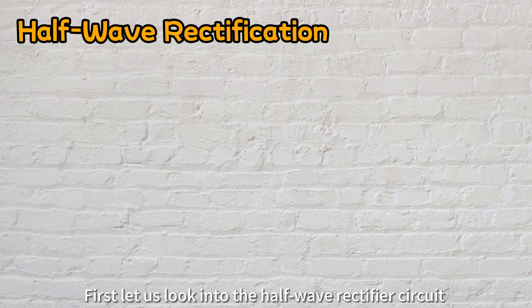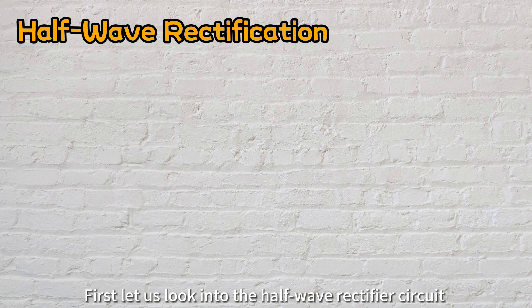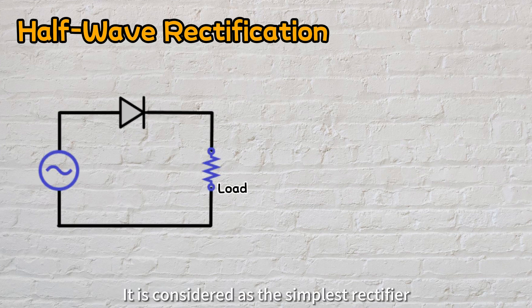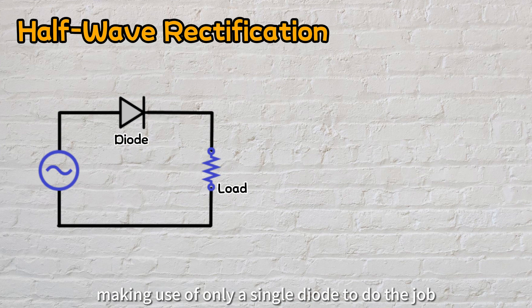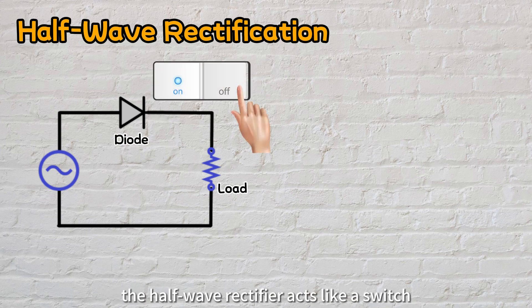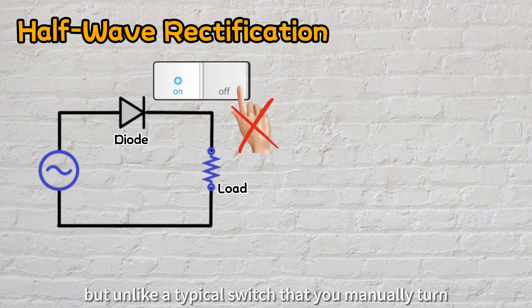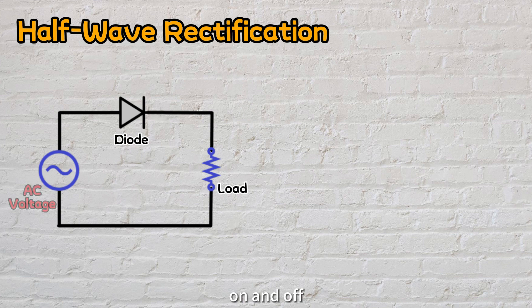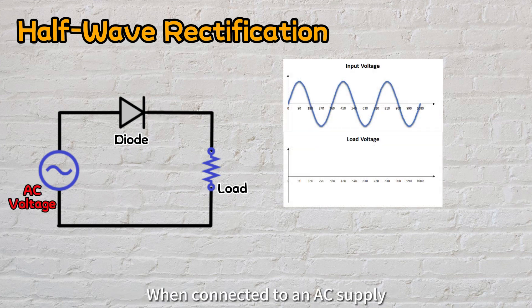First, let us look into the half-wave rectifier circuit and how it works. It is considered the simplest rectifier, making use of only a single diode to do the job. In operation, the half-wave rectifier acts like a switch. But unlike a typical switch that you manually turn on and off, the diode is controlled by electrical voltage.